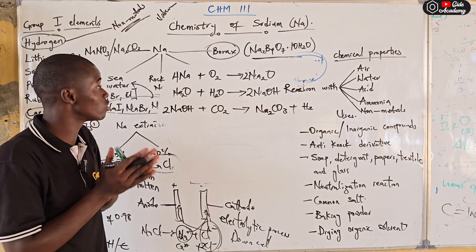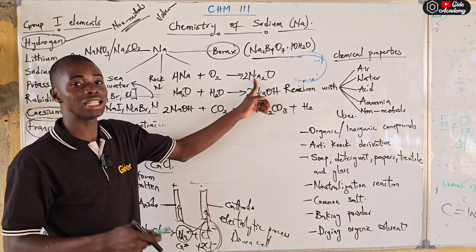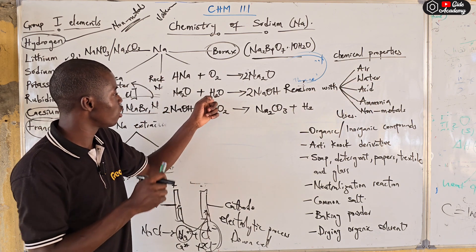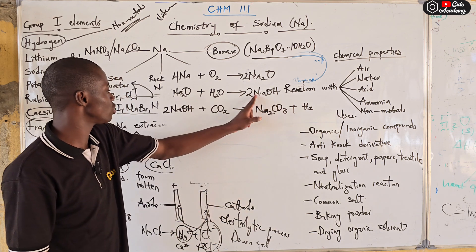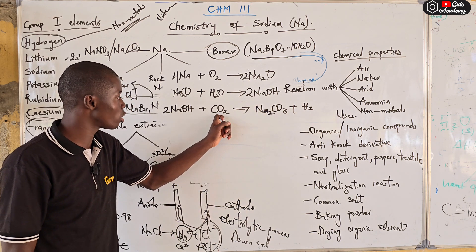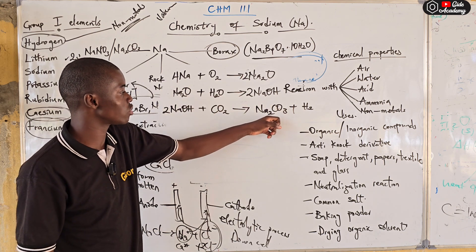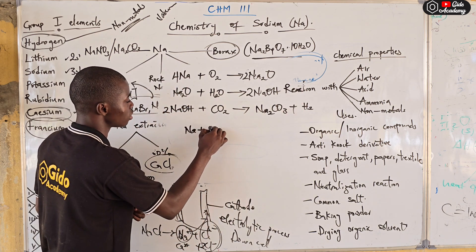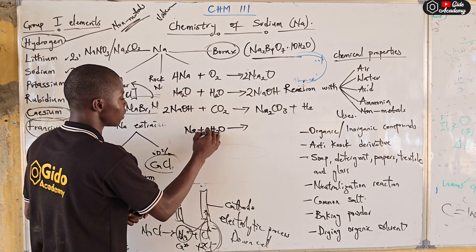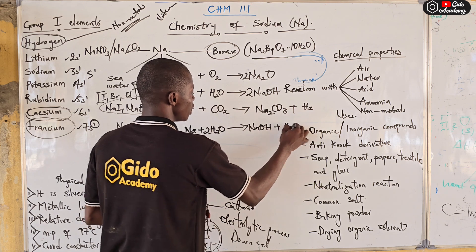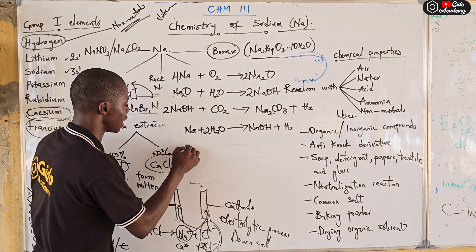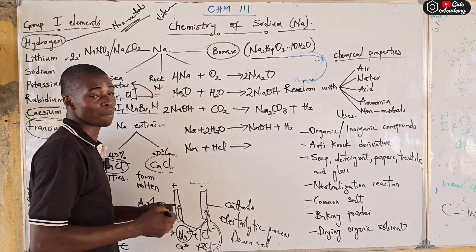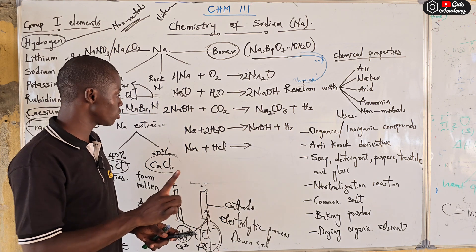So when sodium is exposed to the atmosphere, it first forms sodium oxide, which absorbs water to give sodium hydroxide, which then reacts with CO₂ to give sodium trioxocarbonate and hydrogen gas. When sodium reacts directly with water, the products are sodium hydroxide and hydrogen gas. When sodium reacts with an acid like HCl, all the ionizable hydrogen ions are removed and a salt is formed.